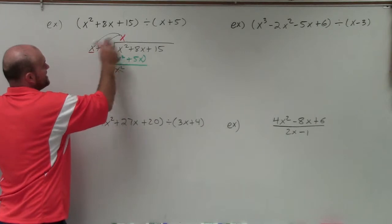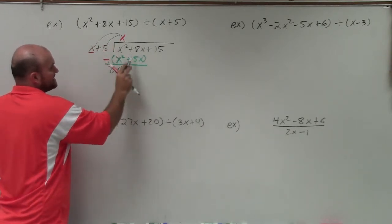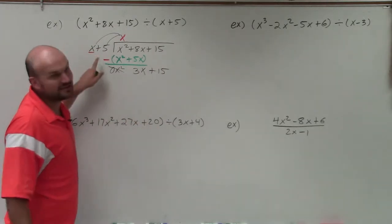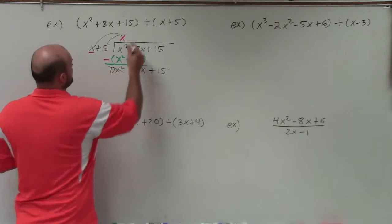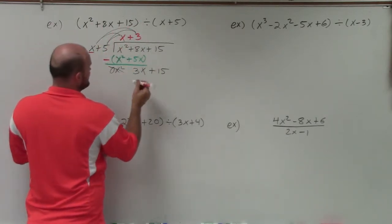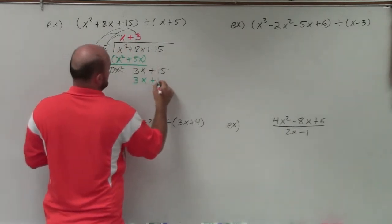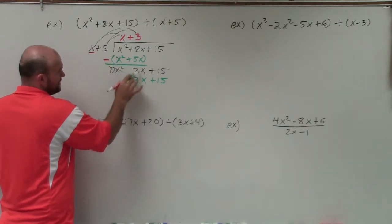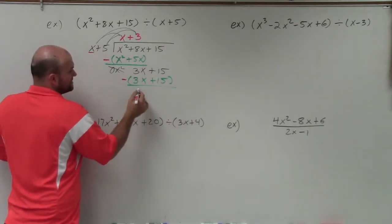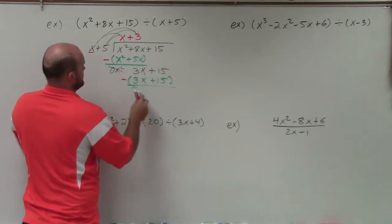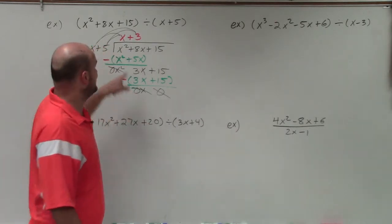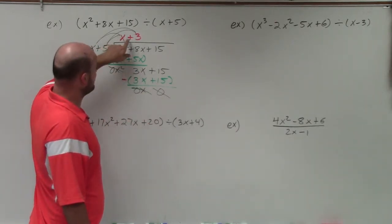Then we subtract the whole row. I put these in parentheses so we can see exactly what's happening, because you're not only subtracting x squared but also the 5x. x squared minus x squared gives 0. Then 8x minus 5x gives me 3x. Bring down the rest of my terms and do the division process again. x divides into 3x positive 3 times. Take 3 and multiply it by x and by 5: 3 times x is 3x, 3 times 5 is positive 15. Subtract: 3x minus 3x is 0, 15 minus 15 is 0. When you have a 0 remainder, your quotient is x plus 3.